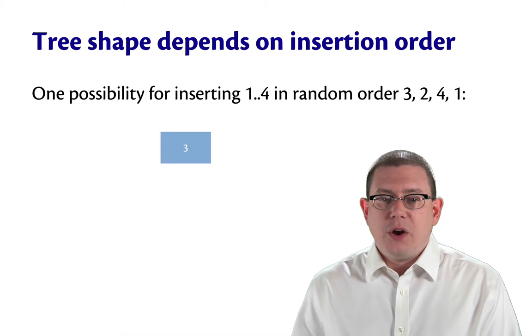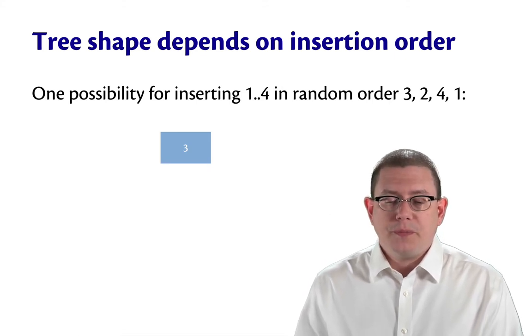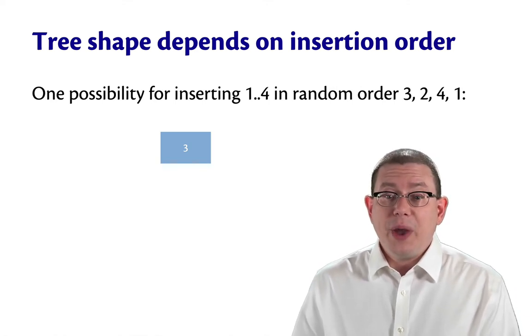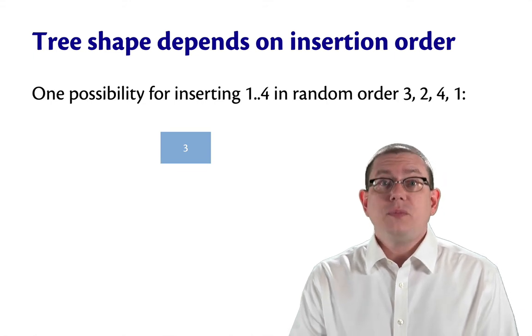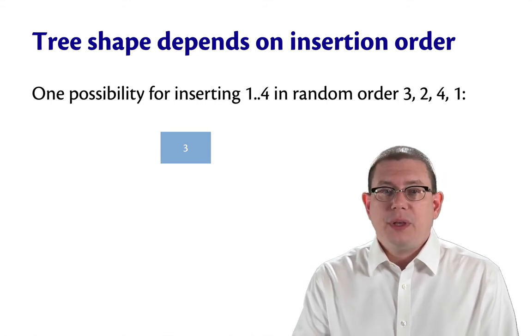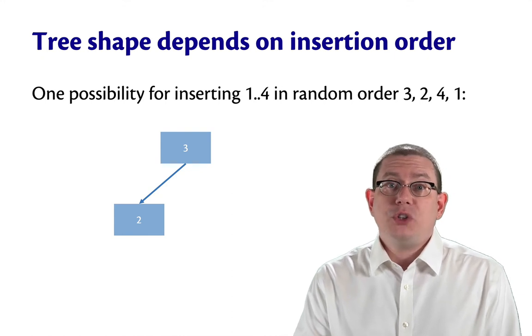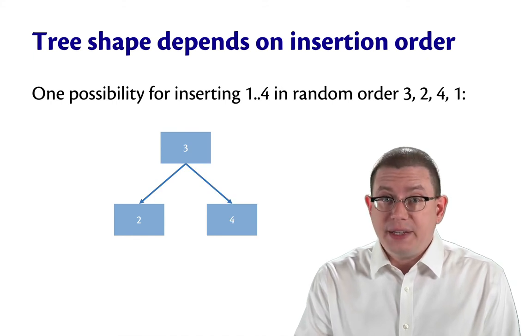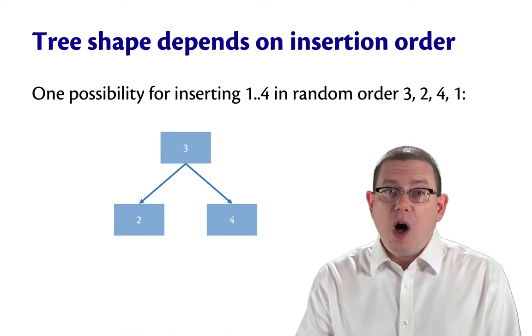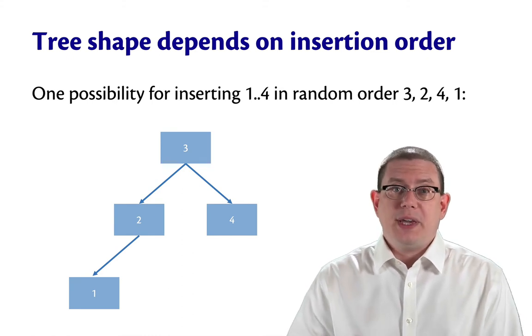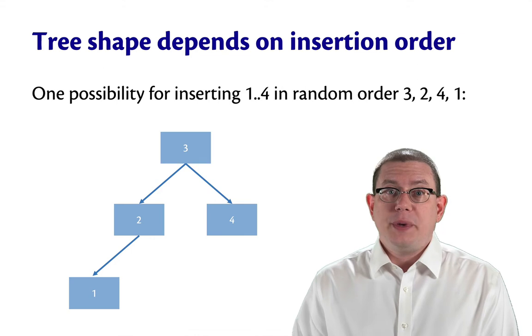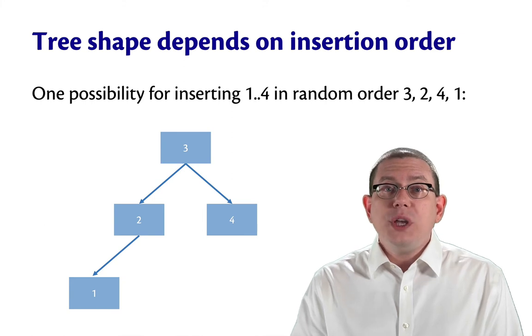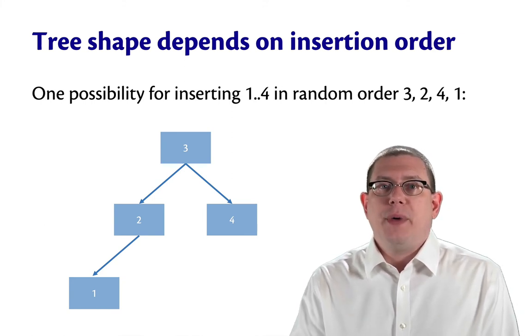So the tree shape here depends on the insertion order. Suppose you were inserting the elements 1 through 4 and you happened to insert them in this random order 3, 2, 4, 1. You'd start off with 3, then you'd go to insert 2, that would have to go to the left by the BST invariant. Then you insert 4, that would have to go to the right by the BST invariant. Then you insert 1, that would go to the left of 2 by the BST invariant. So all of this is completely deterministic. The invariant tells you exactly where each node has to be inserted. It's only the insertion order that's controlling the shape of the tree.